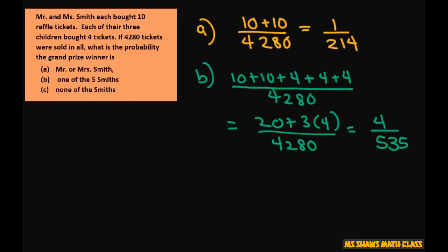Now, none of the Smiths. So all you're going to do here is, if one of the Smiths, we're going to use the complement principle. Just for C, do 1 minus one of the Smiths. So that's going to be 4 divided by 535.